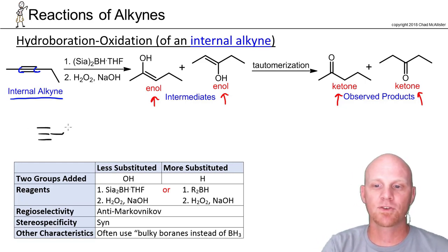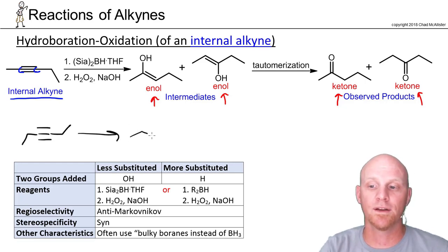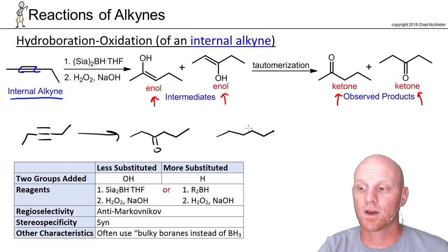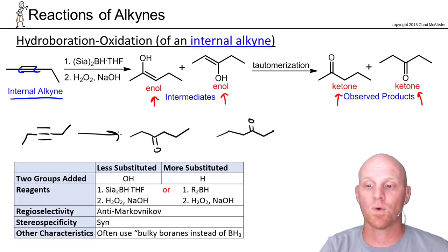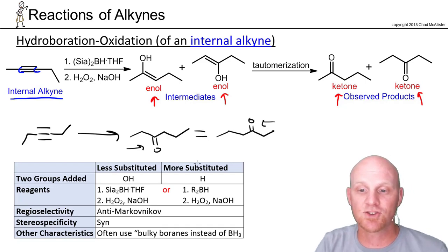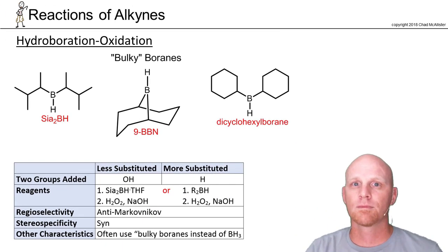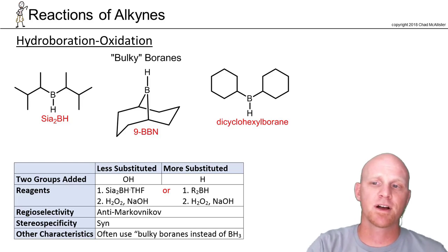Markovnikov and anti-Markovnikov only matter for terminal alkynes. For internal alkynes, it makes no difference which reagents you use. One additional reminder: if you have a symmetrical internal alkyne, instead of two different products you only get one. For example, with a six-carbon symmetric alkyne, placing the ketone third from the left is the same as third from the right — so you get just one product.